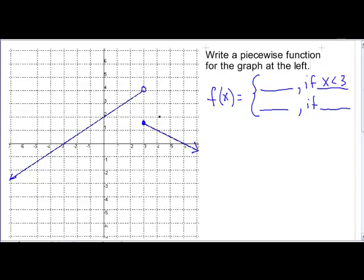Going to the right, it includes the point 3 and goes to the right forever. That inequality statement would be x greater than or equal to 3.